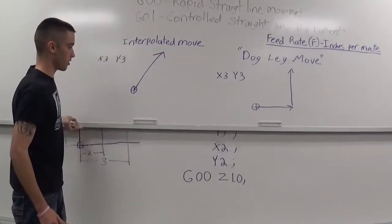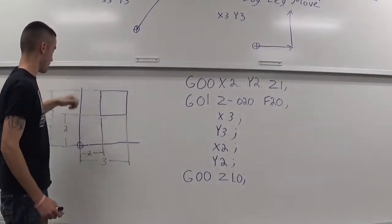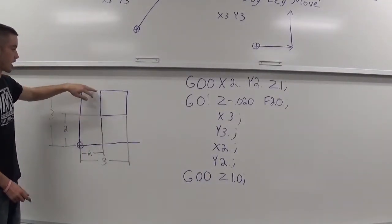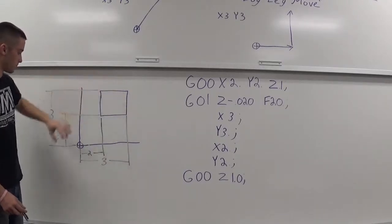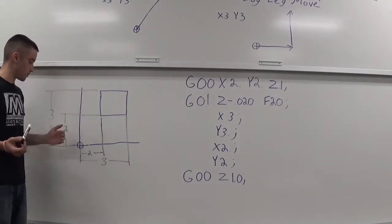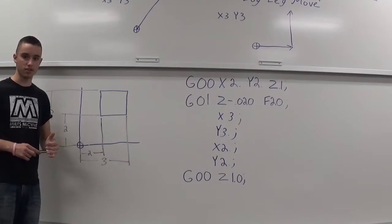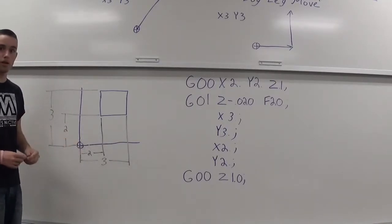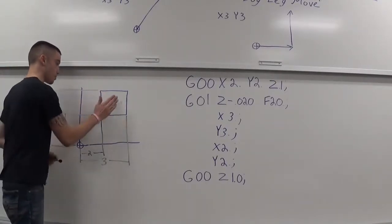Now, we're going to go to an example here. We're just going to be doing a contour of a square. My G54, which is my work coordinate system, is right down here in the corner, x0, y0. My z0 is the top of the part.